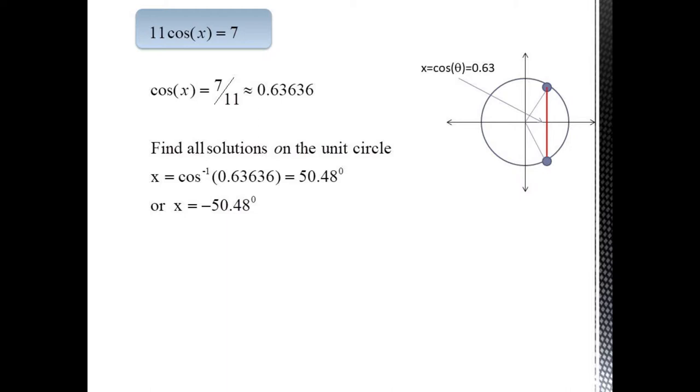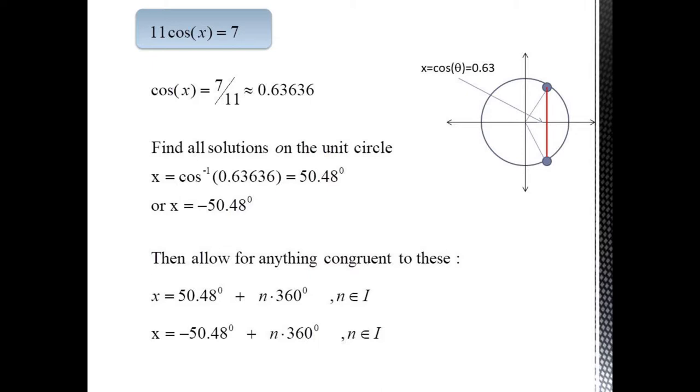We need to think of this as a reference angle on our unit circle and observe that minus 50.48 degrees would also be a solution. And now to list all our other congruent solutions, we use our same trick, except this time we're using degrees instead of radians. So we write x equals 50.48 plus n times 360 or x equals minus 50.48 plus n times 360.